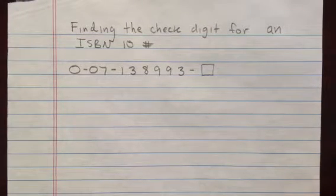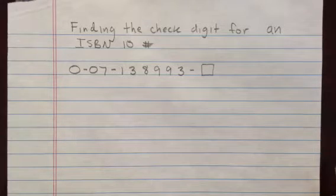Okay, this is Mr. Herman. I'm back again with another installment of how to find the check digit for an ISBN 10 number. This particular number comes from an algebra book I happen to have here handy. I thought it would be quick to grab one from the book.